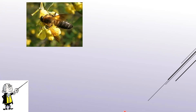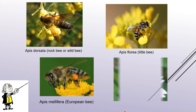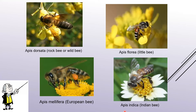Different species of honey bee include Apis dorsata, also called rock bee or wild bee — it is not easily domesticated, so apiculturists generally do not prefer it. Apis florea is called little bee because it is comparatively smaller in size. Apis mellifera is a European bee, and Apis indica is an Indian bee. Out of these four, only Apis mellifera is not indigenous to India; the other three are native. For rearing honey, Apis mellifera and Apis indica are generally preferred. The word Apis itself means bee.